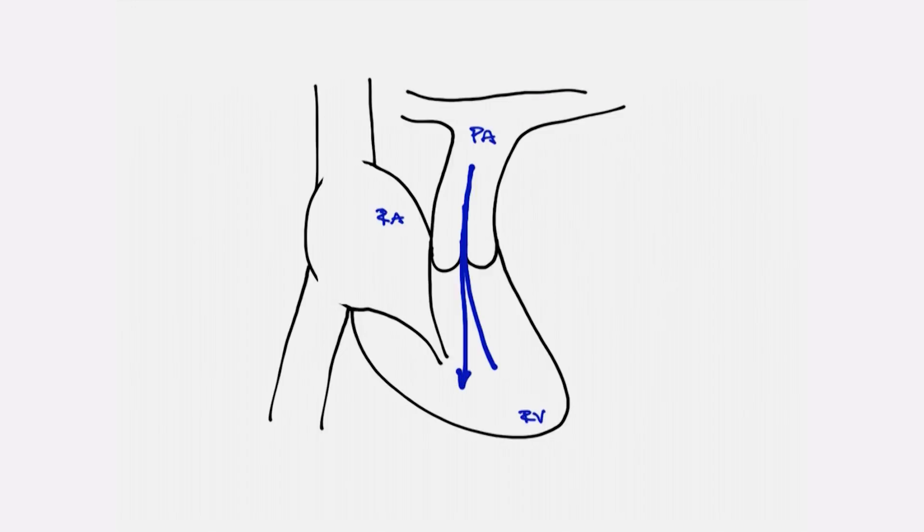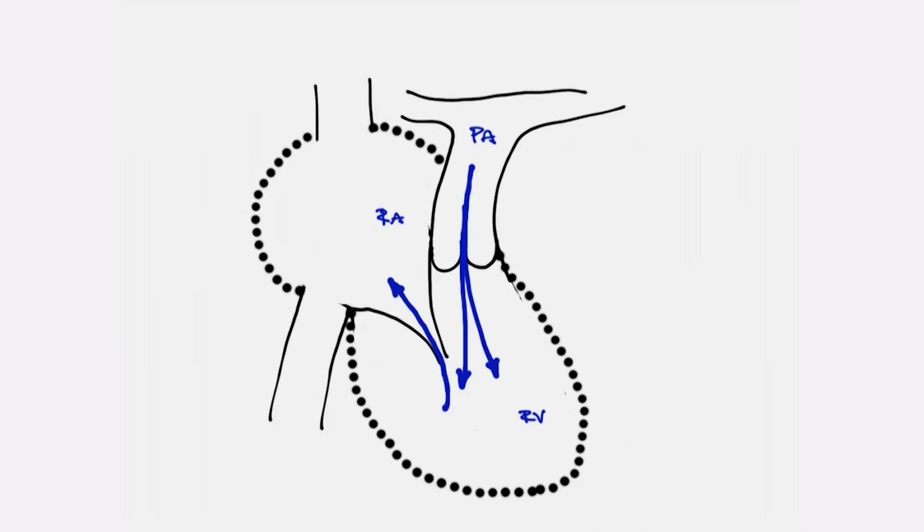When there is severe pulmonary valve regurgitation, enlargement of the right heart eventually occurs, and this can ultimately result in problems including symptoms of breathlessness,